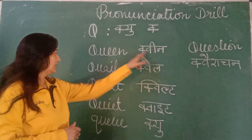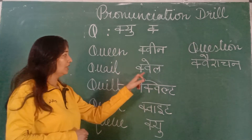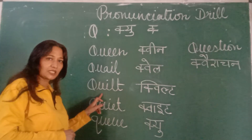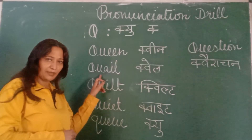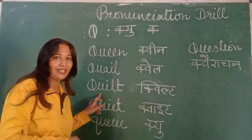Quail. Quilt. Quail is the bird, and quilt is a raza — blanket — in English.